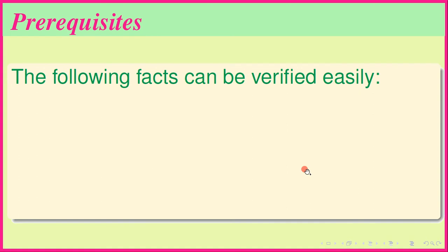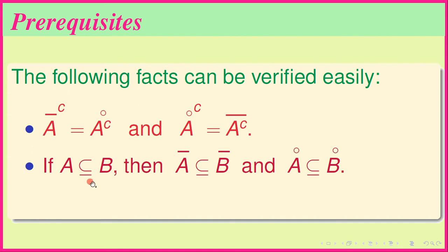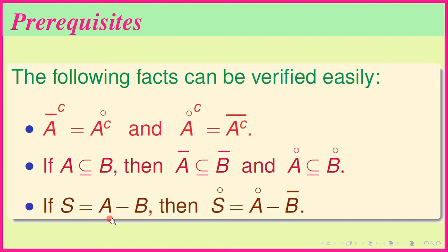The following facts can be verified easily. First, the complement of Ā equals the interior of A complement, and the complement of A° equals the closure of A complement. Second, if A is a subset of B then Ā is a subset of B̄ and A° is a subset of B°. Third, if S equals A minus B then S° equals A° minus B̄ — note it is B closure, not interior.